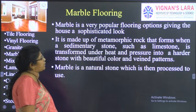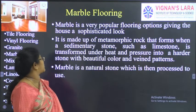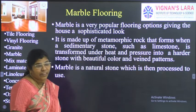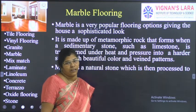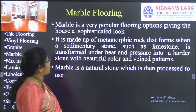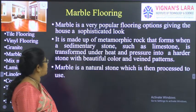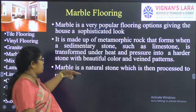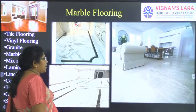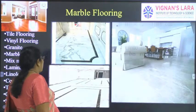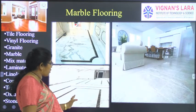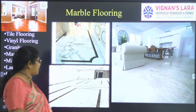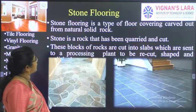The next type is marble flooring. Marble is a very popular flooring option that gives a sophisticated look to the house — whenever we think of marble flooring we think of the Taj Mahal. It is made up of metamorphic rock that forms when a sedimentary stone such as limestone is transformed under heat and pressure. Marble is a natural stone which is processed, polished, and used. It gives an elegant look and does not need much polishing.